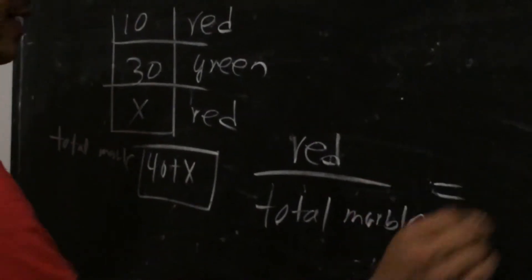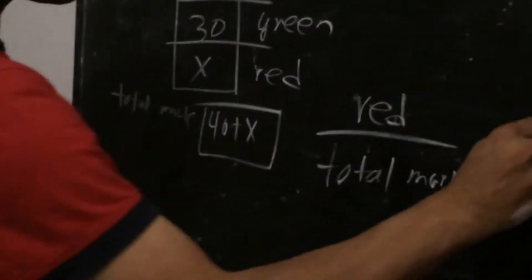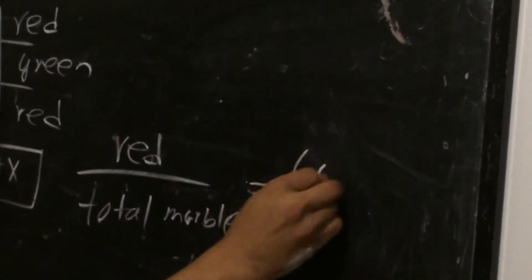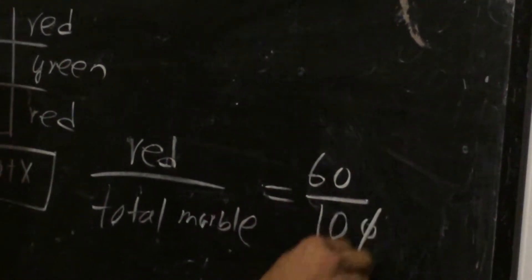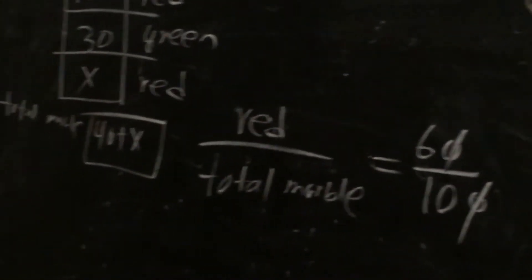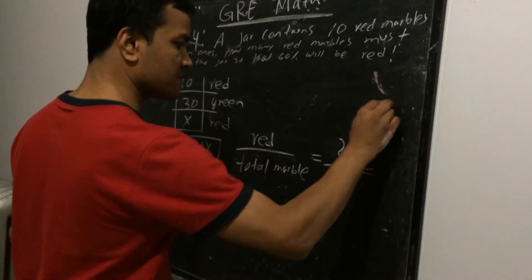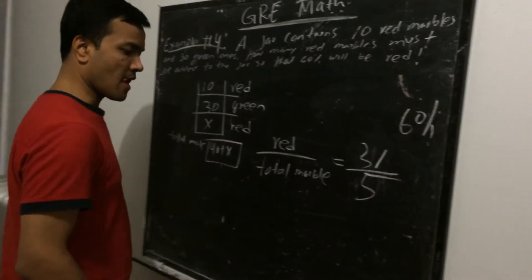Is equal to 60%, and 60% can be written as 60 over 100, which is 6 over 10, which is 3 over 5. So I'm going to just write 3 over 5. This is 60%, okay.